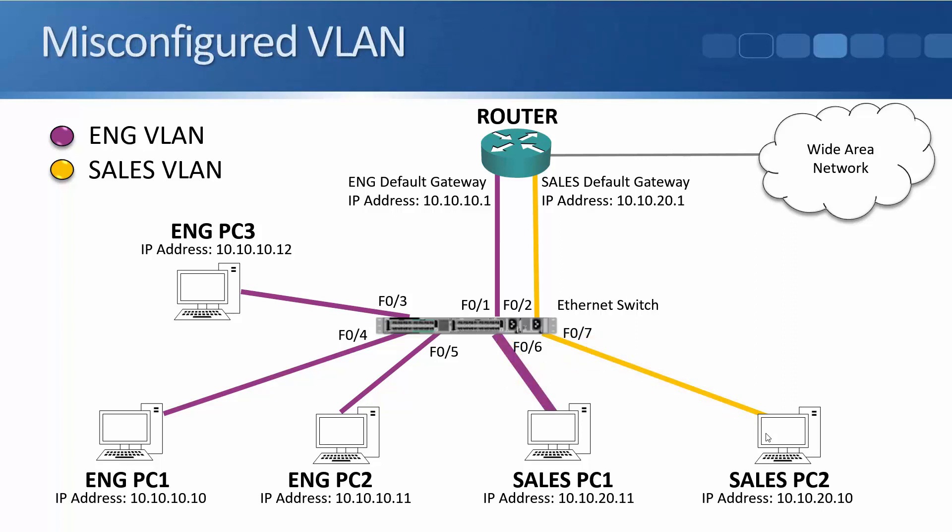If we misconfigure our VLANs — for example, if we accidentally put sales PC1 into the engineering VLAN instead of the sales VLAN — then our sales PCs won't be able to talk to it anymore. If sales PC2 sends traffic with a destination IP address of 10.10.20.11, the switch will not forward traffic between different VLANs; that would have to go via a router. So the traffic won't make it to sales PC1. You need to be careful: hosts in the same IP subnet should be in the same VLAN.